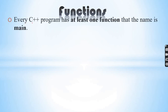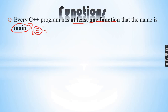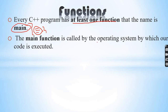Every C++ program must have at least one function. The minimum function in every C++ program is the main function. The main function is called by the operating system automatically.